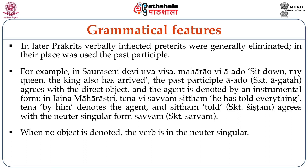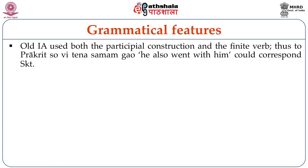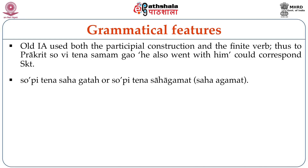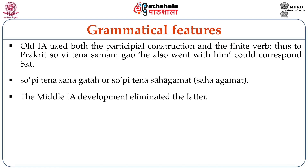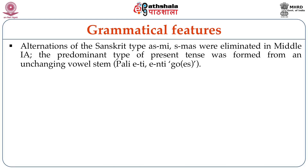Old Indo-Aryan used both the participle construction and the finite verb. Thus in practice, sopithena savvamgao (he also went with him) could correspond to Sanskrit sopithena sahagamat or sopithena sahagamat — both are possible. The Middle Indo-Aryan development eliminated the latter. Alternations of the Sanskrit type asmi/smas were eliminated in Middle Indo-Aryan. The predominant type of present tense was formed from an unchanging vowel stem, for example yeti, enthi, etc.